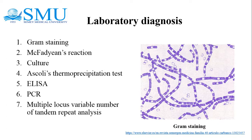Gram staining reveals gram-positive large rectangular rods; spores are usually not seen in clinical samples. The McFadyean reaction: the polypeptide capsule can be demonstrated by staining with polychrome methylene blue stain for 30 seconds, with the capsule appearing as amorphous purple material surrounding blue bacilli. This is used for presumptive diagnosis of animal anthrax.